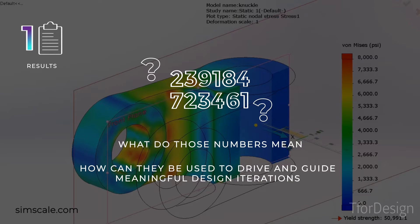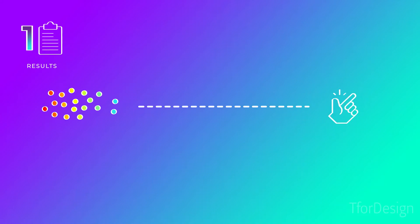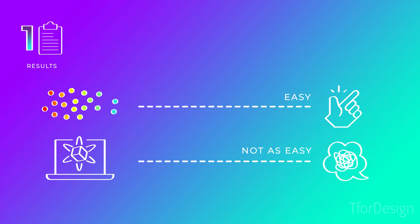Most importantly, what do those numbers mean for us specifically in whatever project we are working on? How can they be used to drive and guide meaningful design iterations? Answering those questions would often require more in-depth knowledge and experience on topics that go beyond the apparent software application and into principles of design and mechanics of materials. So getting numbers and colorful plots is easy, but being able to understand those numbers and reflect them on our designs is not as easy.